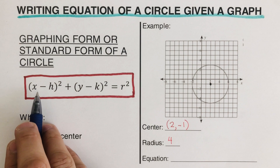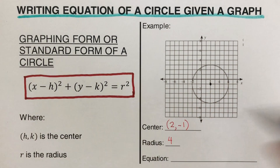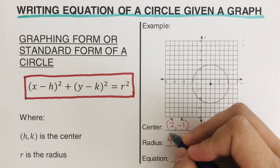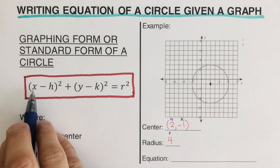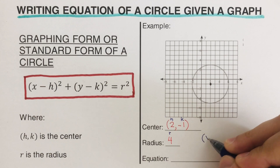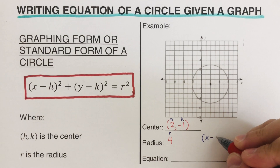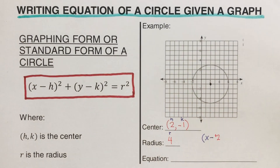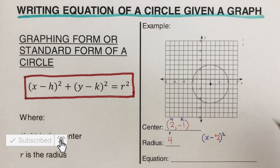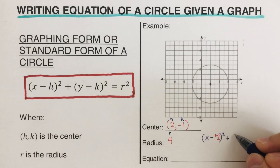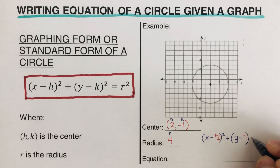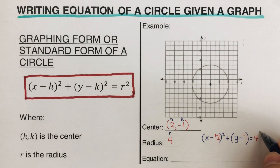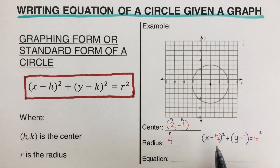Now we can write the equation by plugging in our values. This represents h, this represents k, and this represents r. So we have: x minus h, which is 2 — that's a positive 2 — squared, plus y minus our k, which is negative 1, squared, equals r which is 4, squared. Be sure to include the squares.